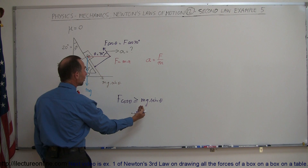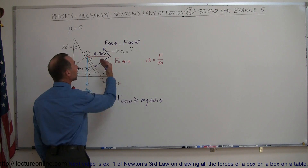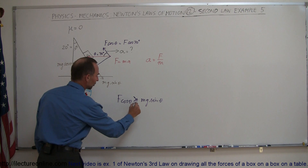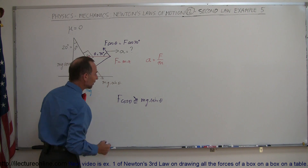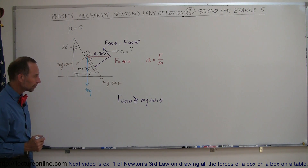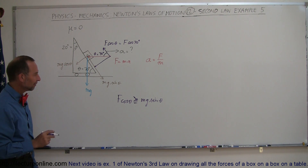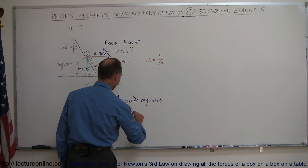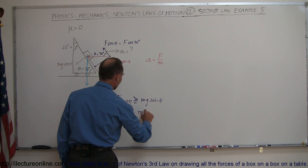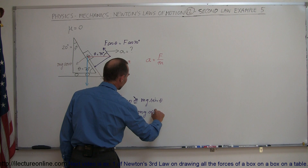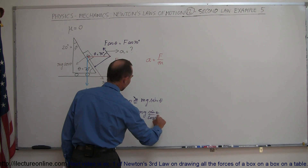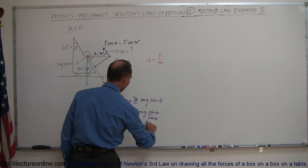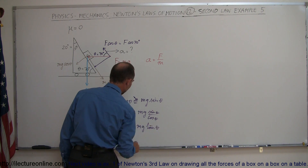If F·cos(θ) is greater than mg·sin(θ), the block will actually begin to slide upward, so we just consider when they're equal. Dividing both sides by cos(θ), we get F equals mg·sin(θ) divided by cos(θ), which of course gives F equals mg·tan(θ).